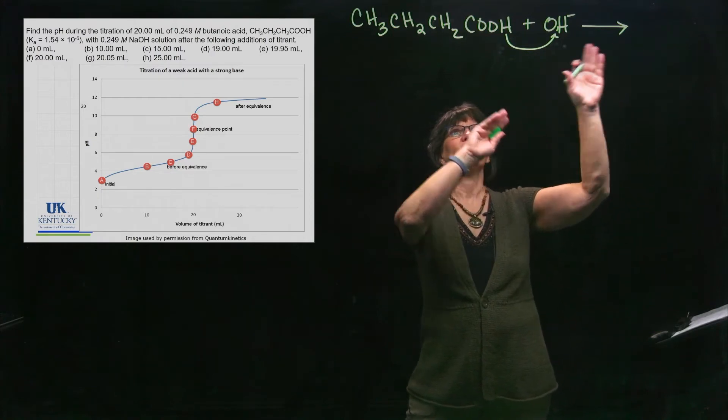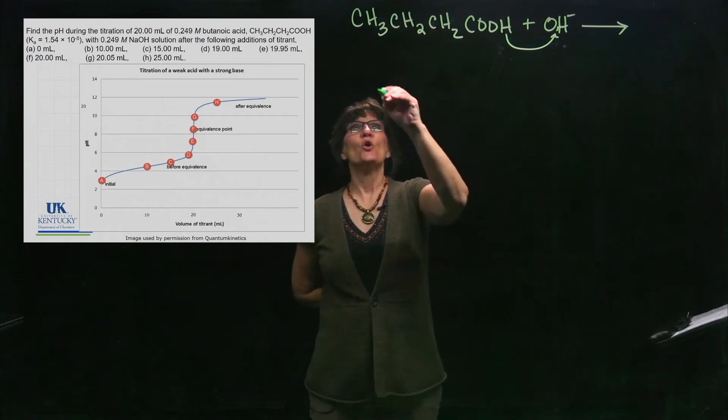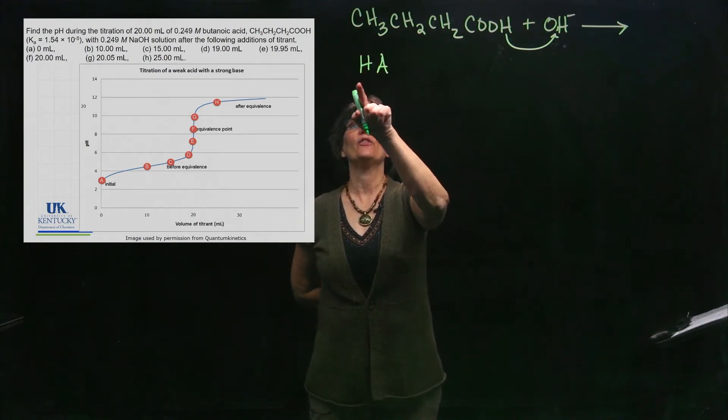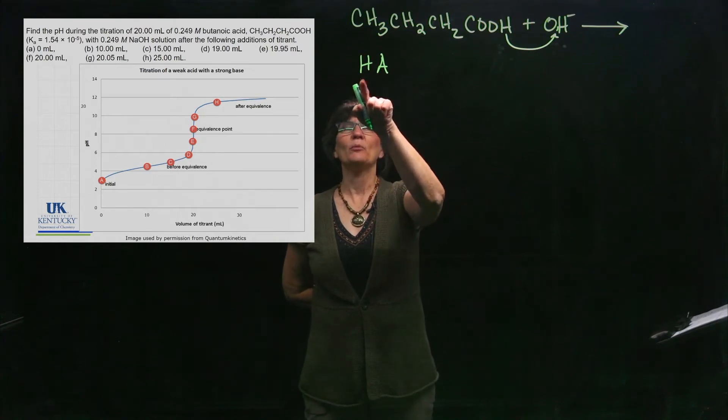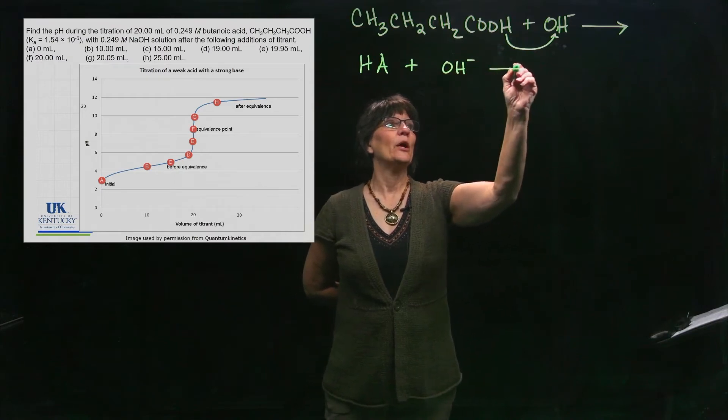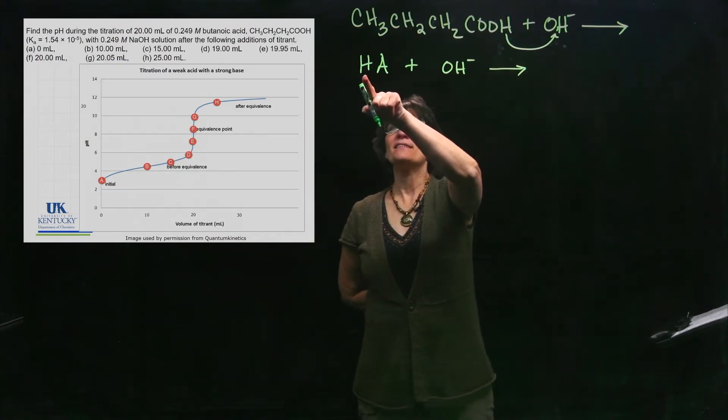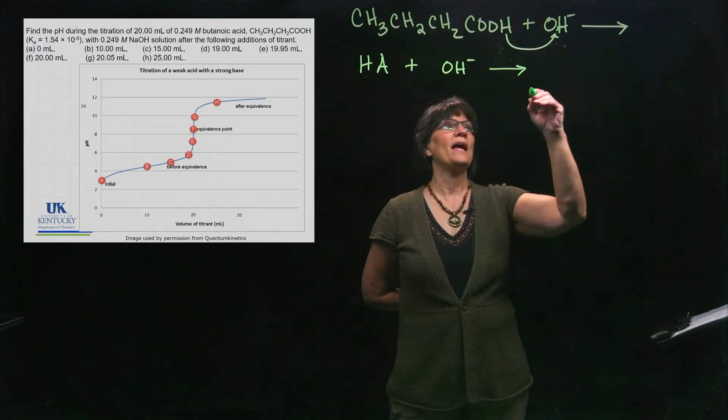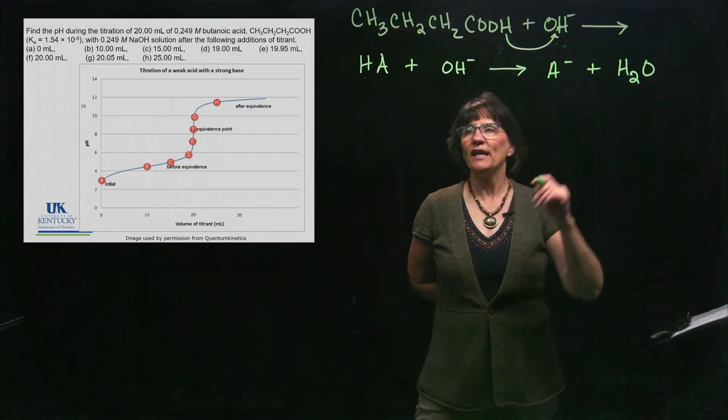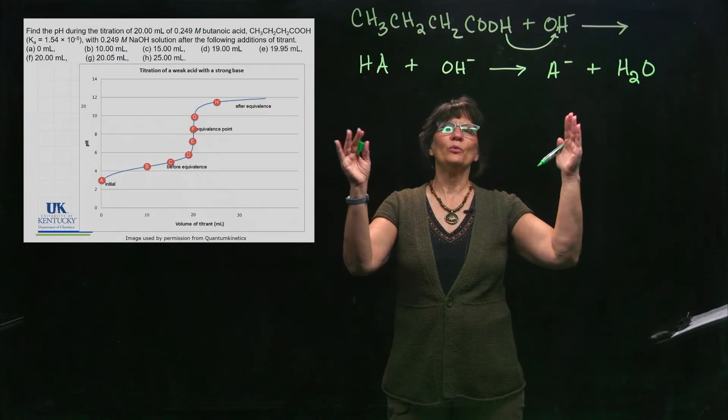The products for this reaction will be this donating its proton to the water and leaving me with the products. That ends up being a very lengthy way to write a reaction, so to get it all on one line I'm just going to let this represent the weak acid. It has a donatable proton, it is reacting with the strong base. It is a one-way reaction because of that strong base. The acid donates to the base giving me A minus plus water.